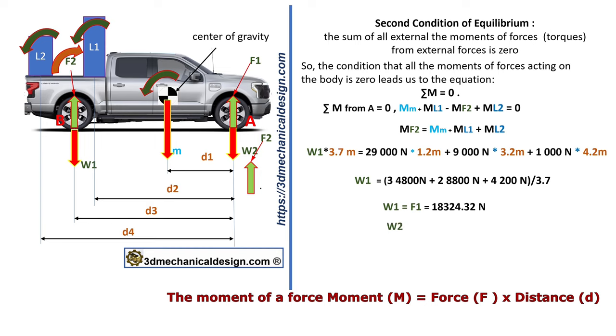W2 equals F2 equals 39,000 newtons minus W1 equals 39,000 newtons minus 18,324.32 newtons equals 20,675.68 newtons.